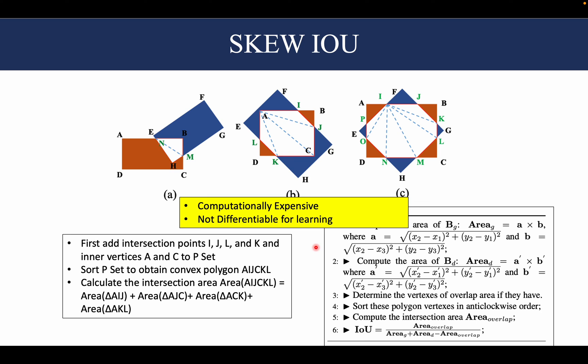In the coming video, I will discuss how using Gaussian modeling for rotated bounding boxes we can overcome both the problems with SKEW IOU as well as the problems of using LN losses that we saw in the previous video.